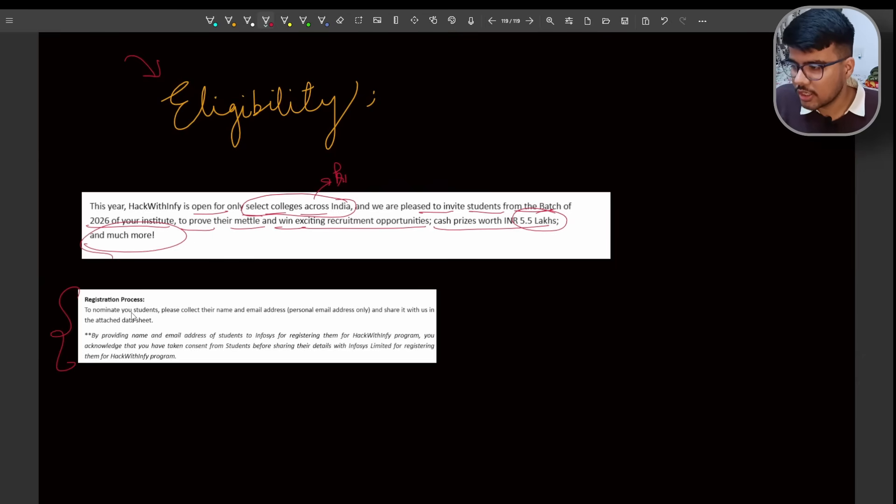Registration process. To nominate your students, please collect their names and email ID, personal email address only, and share with us the attached data sheet, which is your TPO. Ask your TPO that do they get any notification from Infosys or not, because TPO is the only responsible guy who will take your details and push your details towards Infosys so that you can take a chance or participate in this particular opportunity.